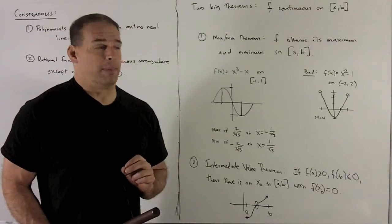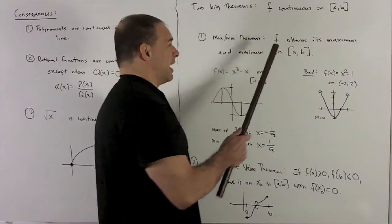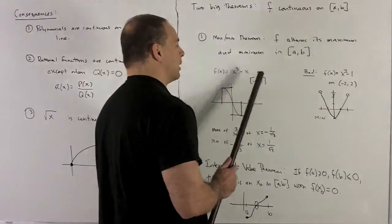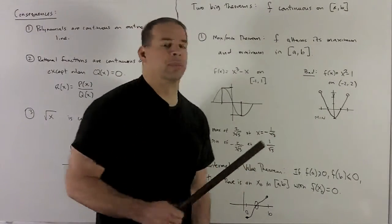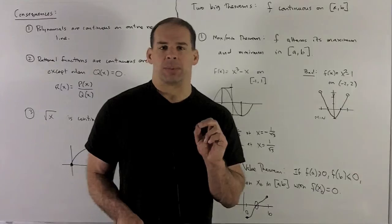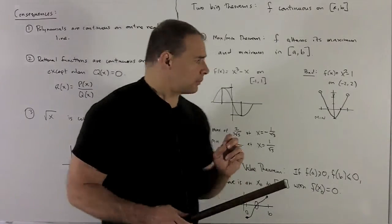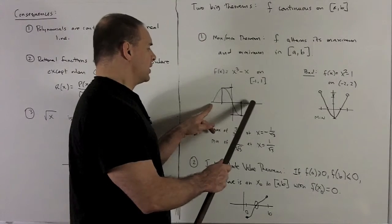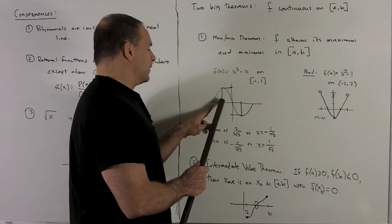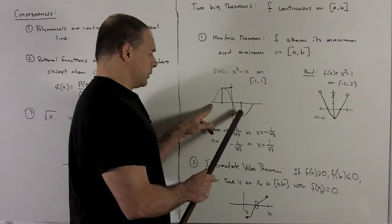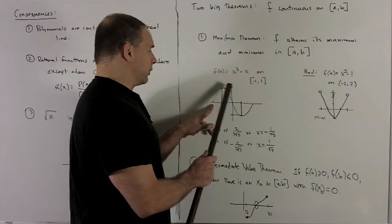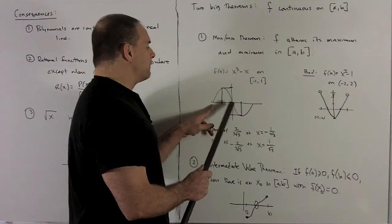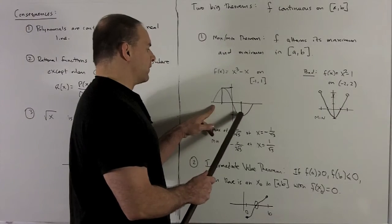My first theorem, the min-max theorem, is going to say F attains its maximum and its minimum on the interval AB. So now, what do I mean by maximum or minimum? Well, the idea is going to be, okay, you draw the graph of your function. You're going to get something like this. There's going to be a point where if you take the biggest Y value and the smallest Y value that your function takes, you can actually find points that get us to those values.